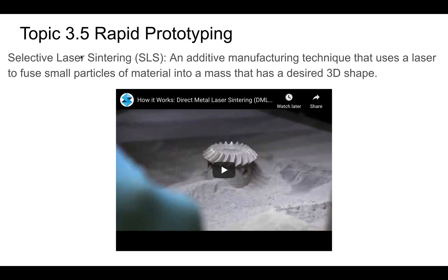This is selective laser sintering — an additive manufacturing process where a laser fuses together tiny particles of material into a 3D shape. You'll see a laser shoot into powder, melt it together, and form these shapes. It's pretty mesmerizing to watch. Go ahead and enjoy that video. That's it for today — thanks, guys.